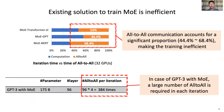All-to-all communication is very time-consuming and slows down the training. We profiled three kinds of MoE models and found that all-to-all communication can account for a significant proportion of each iteration, which makes training inefficient. In the case of a GPT-3 with MoE model, there are even 384 all-to-all communications required in each iteration.